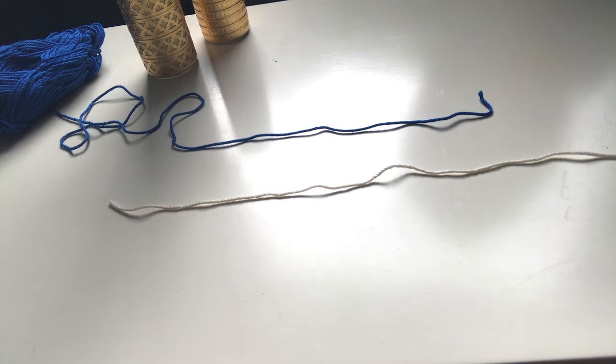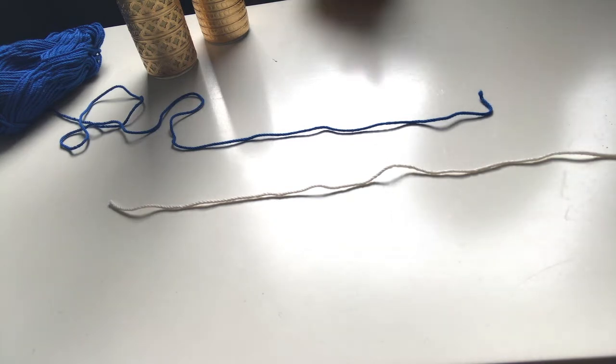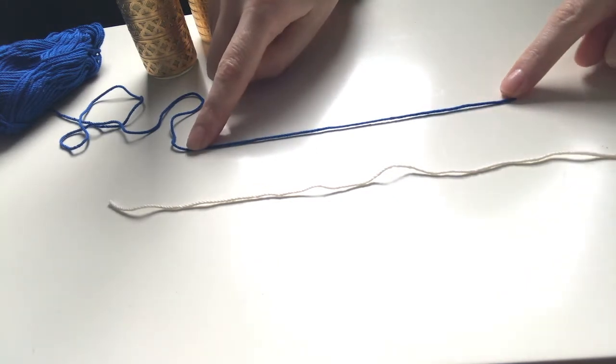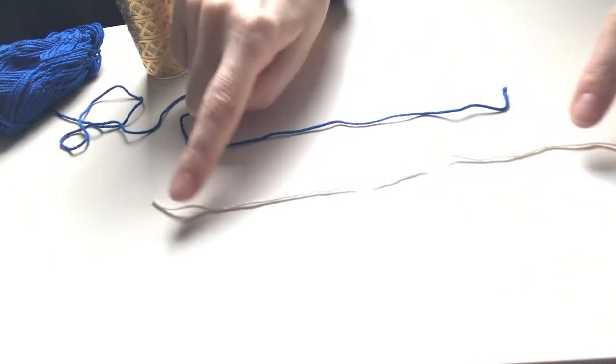I use a knot which is very easy to hide. I call it invisible knot and some people call it magic knot. So let me show you. I have in this case a blue yarn and then a white yarn so you can see.